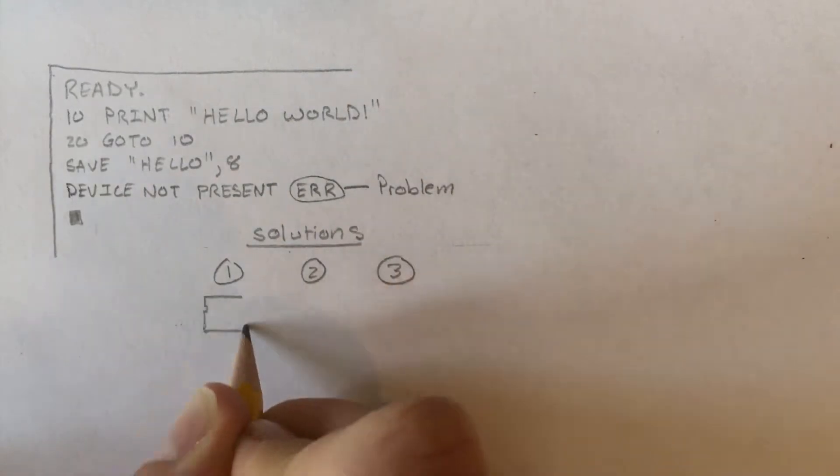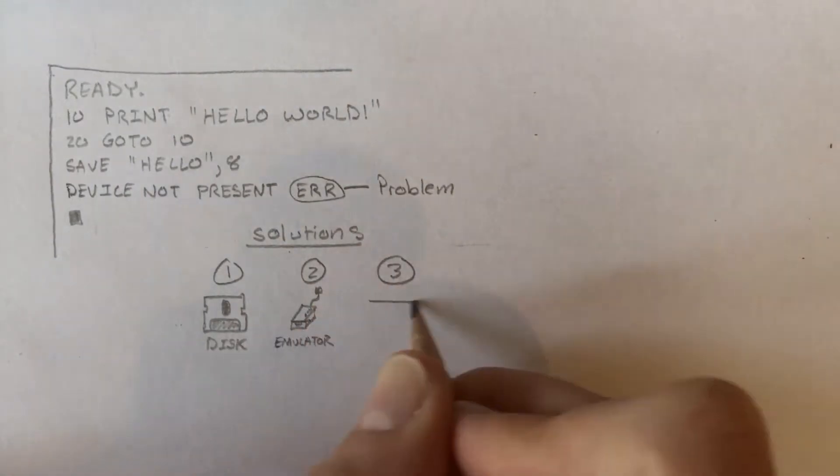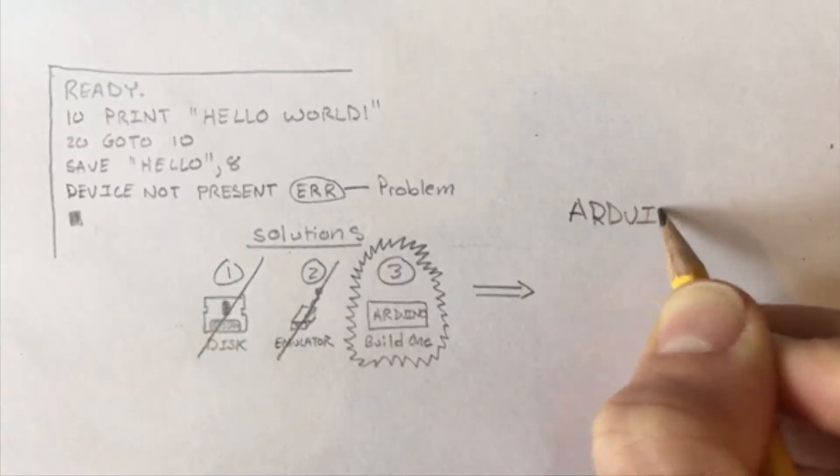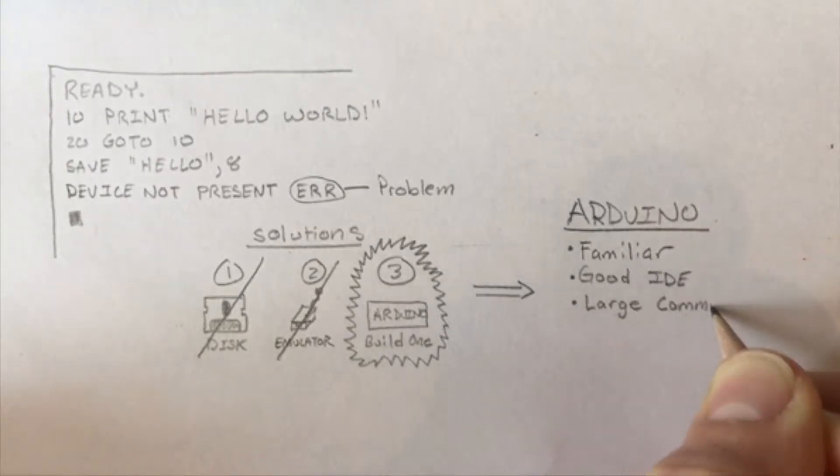After deciding against buying an original disk unit or modern emulator, I decided to design my own. I chose to use the Arduino as the main platform for the challenge because I was familiar with it, I liked the IDE provided, and I knew the ATmega328p microcontroller could be used as a standalone device.